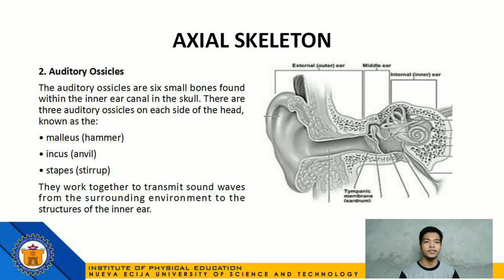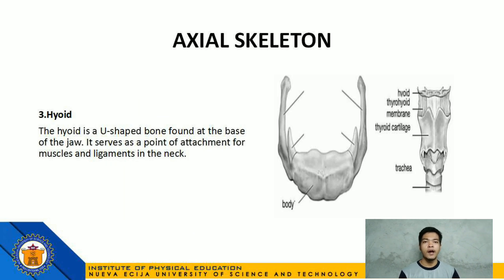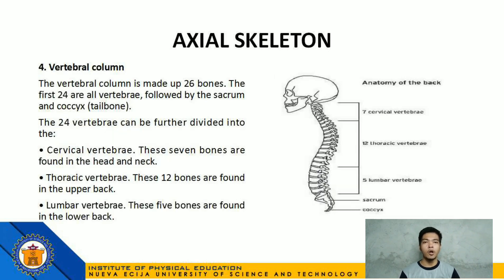They work together to transmit sound waves from the surrounding environment to the structures of the inner ear. Number 3: Hyoid — a U-shaped bone found at the base of the jaw; it serves as a point of attachment for muscles and ligaments in the neck. Number 4: Vertebral column, made up of 26 bones — the first 24 are vertebrae, followed by the sacrum and coccyx or tailbone. The 24 vertebrae are divided into cervical vertebrae (7 bones in the head and neck), thoracic vertebrae (12 bones in the upper back), and lumbar vertebrae (5 bones in the lower back).